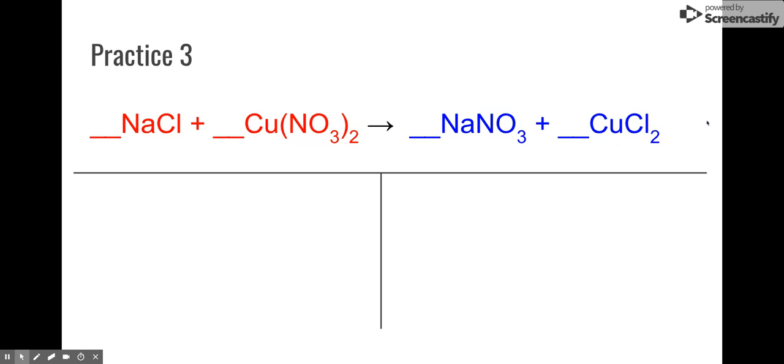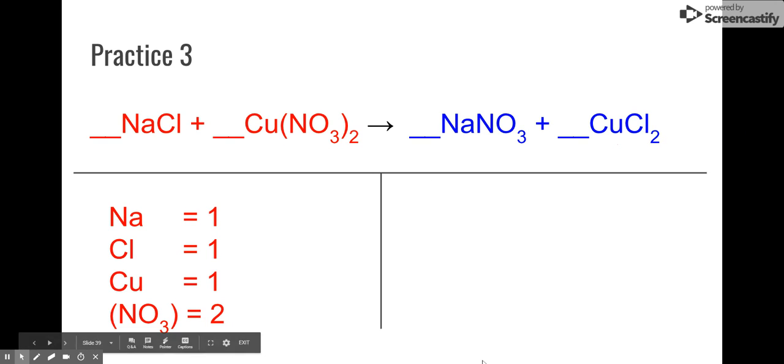All right. I hope you paused it. If not, I really recommend that you do, but let's go ahead and get started and try to figure this one out. Okay. I'm going to just account for what we have on the reactant side. We have one sodium, one chlorine, one copper, and then again, two nitrates. I'm treating nitrate like a unit instead of breaking it apart.